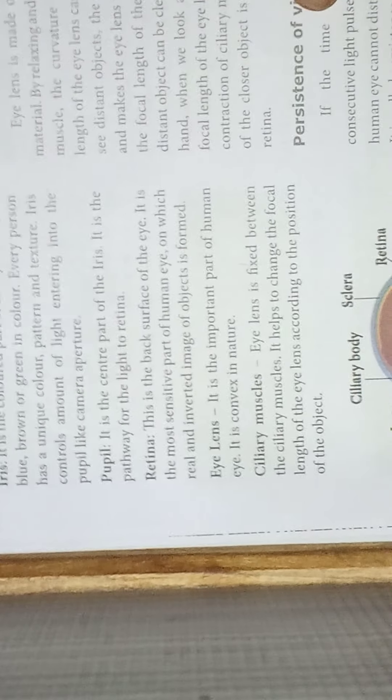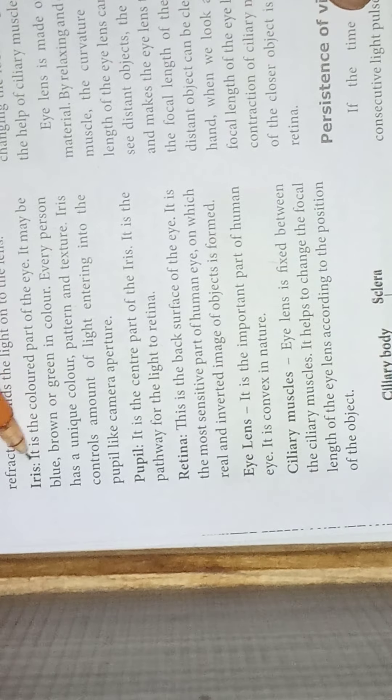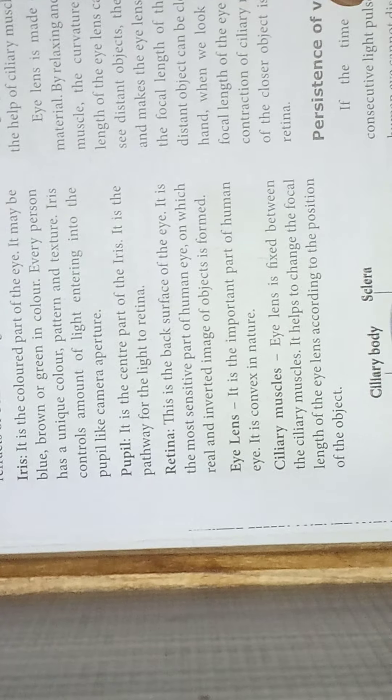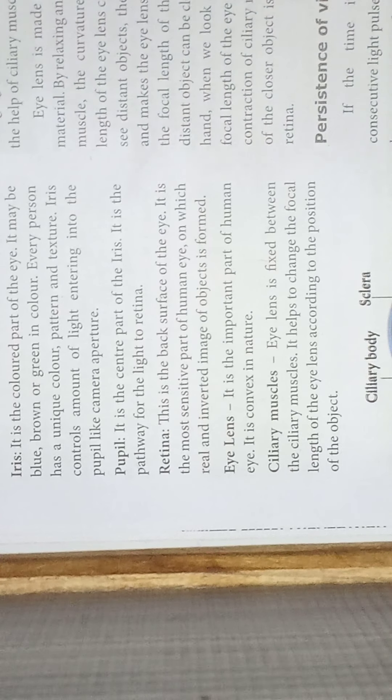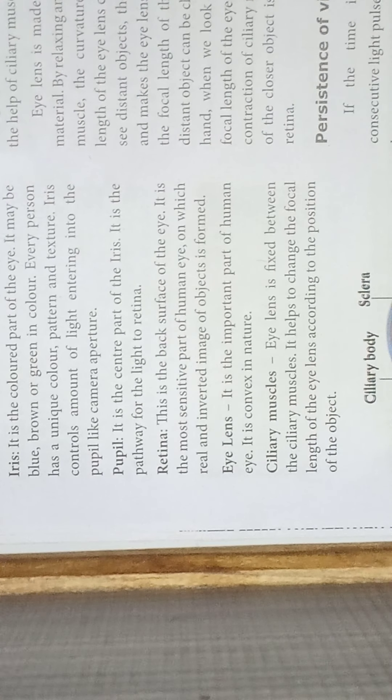Next is the iris. The iris is the colored part of the eye. Every person has a unique color pattern and texture. Eyes can be black, blue, or other colors — each person has a unique color pattern in the iris.